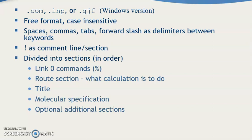The .com, .inp, and .gjf file formats are Windows versions using free format, case insensitive. Spaces, commas, tabs, and forward slash are used as delimiters between words. Exclamation mark is used as a comment line. Sections are divided in order: link zero commands (%), root section, what calculation is to be done, title, and molecular specification sections, as well as optional additional sections.